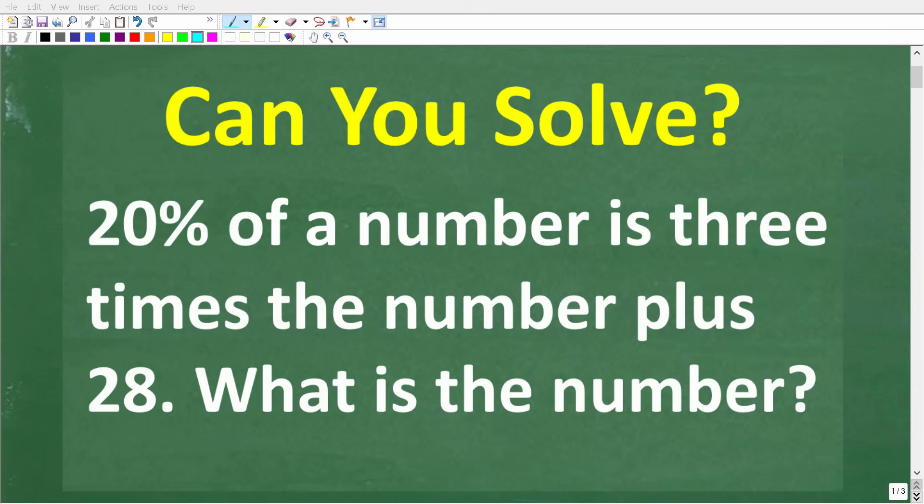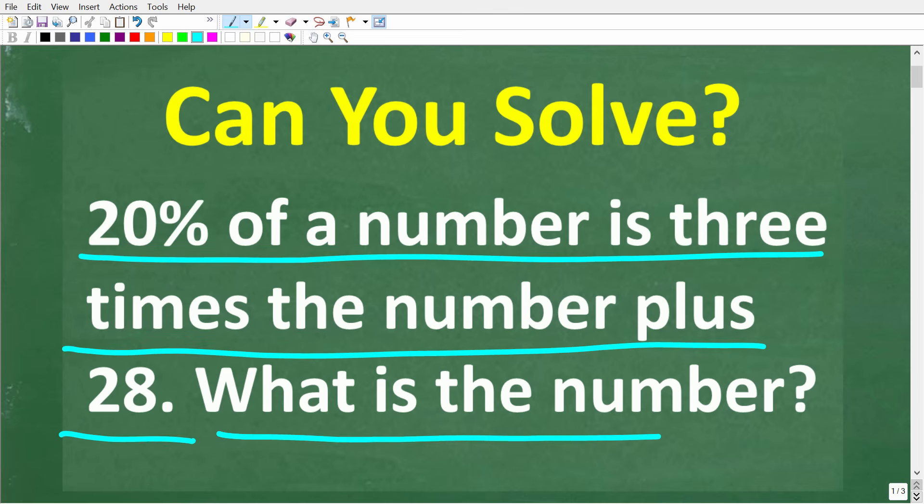A lot of people are going to be confused on how to solve this math problem. Let's take a look at it. So 20% of a number is 3 times the number plus 28. What is this number?